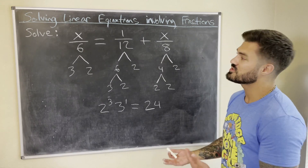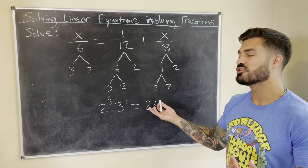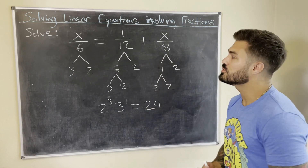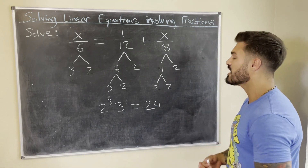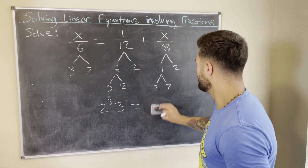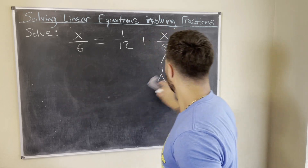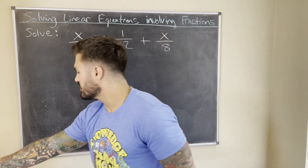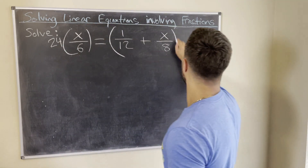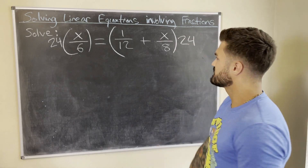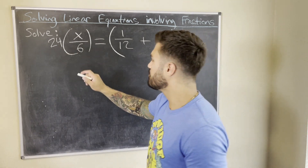2 to the third is 8, times 3 is 24. So 24 is the number we multiply both sides by to eliminate all the fractions. Use this method especially when you have three or more fractions and as the numbers get bigger. Now we multiply both sides of the equation by 24. On the left: 6 goes into 24 four times, so we get 4x.